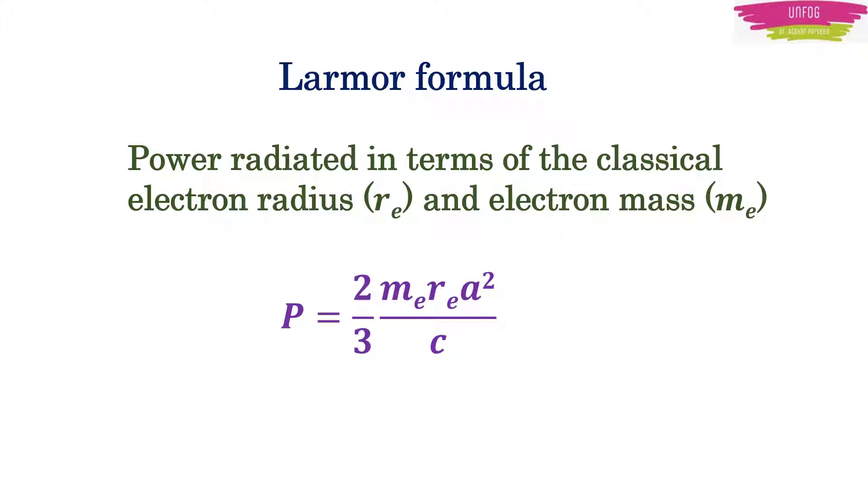This formula gives the power radiated by a single electron in terms of classical electron radius r_e and electron mass m_e. And in this formula, this letter a denotes the acceleration and c is the speed of light.